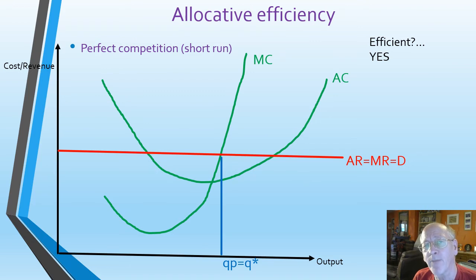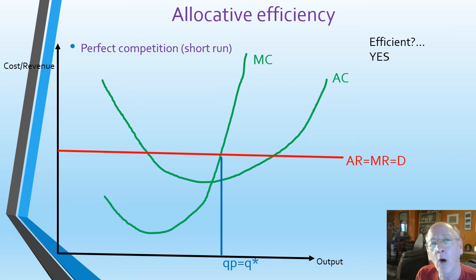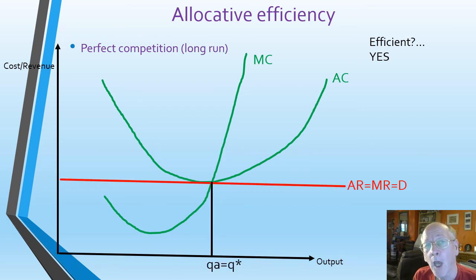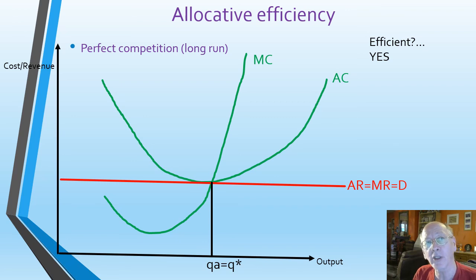What about a perfectly competitive market? In the short run, the perfectly competitive market was not productively efficient, but it is allocatively efficient because the allocatively efficient point where MC equals AR is exactly the same point as profit max, which is where MC equals MR. So perfect competition is allocatively efficient in the short run. In the long run, it is allocatively efficient as well, because we're looking at where MC equals AR for allocative efficiency and where MC equals MR for profit max. So they are allocatively and productively efficient in the long run — which is why it's known as perfect competition. It's perfect.